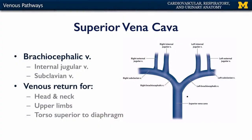The superior vena cava is formed by the nexus of the brachiocephalic veins. These brachiocephalic veins come together in the superior mediastinum to form the superior vena cava, which ends at the right atrium of the heart.